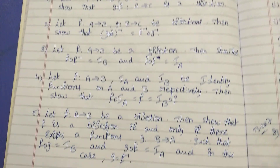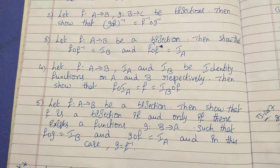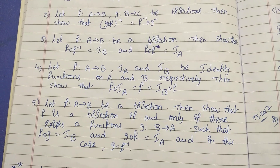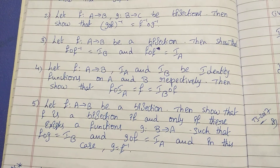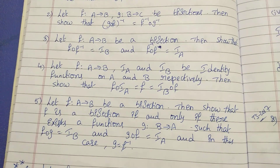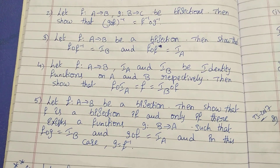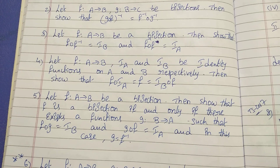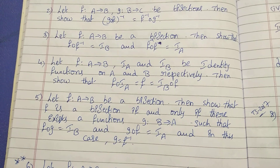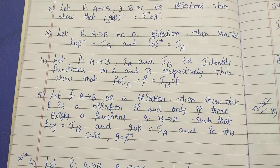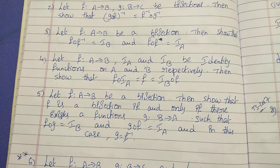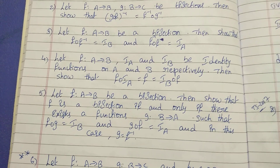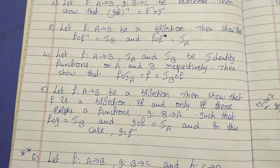This is a theorem. Next: let F from A tends to B be a bijection. Then show that F is a bijection if and only if there exists a function G from B tends to A such that F circle G equals IB and G circle F equals IA. In this case, G equals F inverse. This theorem is important.